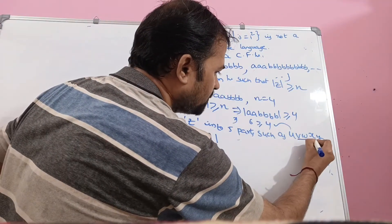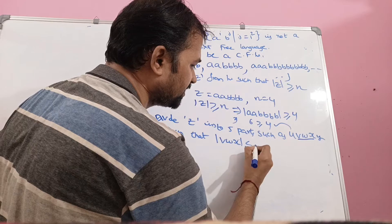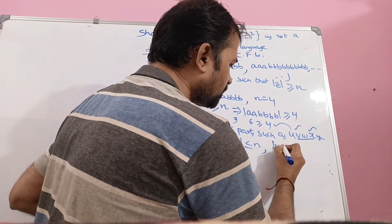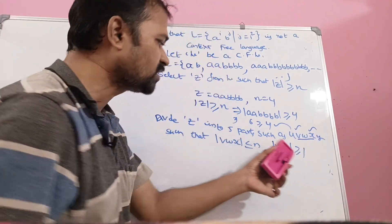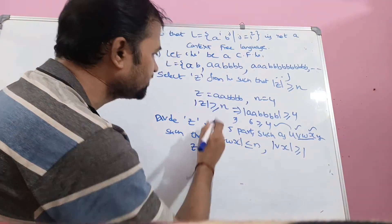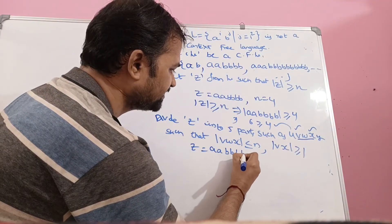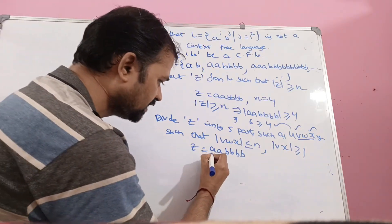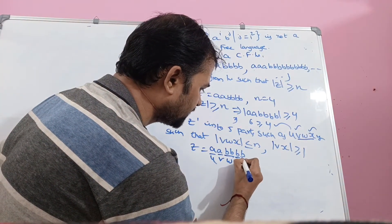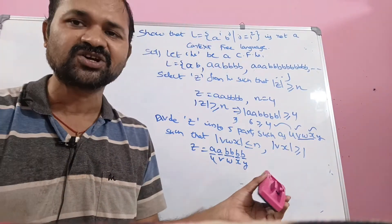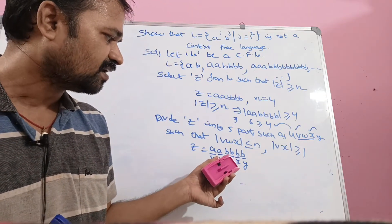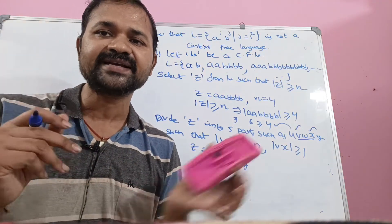The first condition is that the middle portion |vwx| ≤ n. The second condition is that |vx| ≥ 1, meaning v and x cannot both be empty. Now, z = aabbbb. Let us divide it as: u = a, v = a, w = b, x = b, y = bb. It is our choice how we divide, but we must satisfy those 2 conditions.